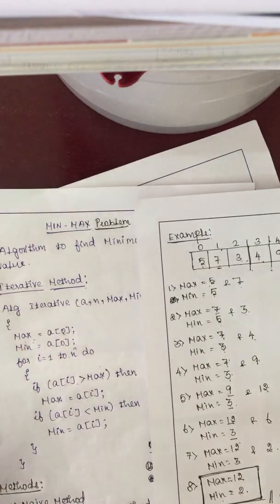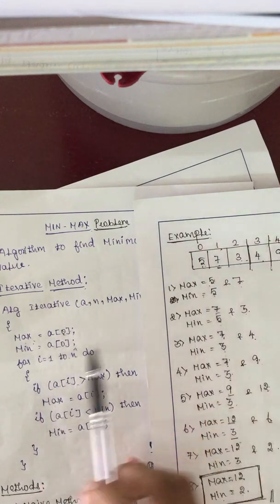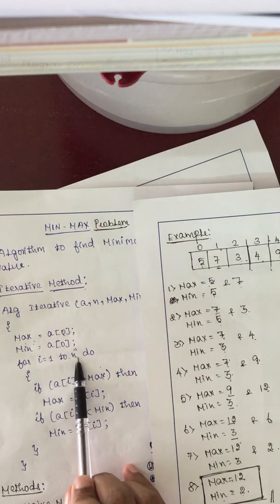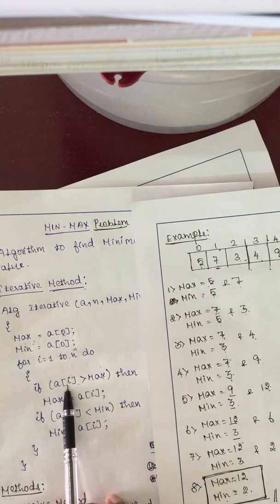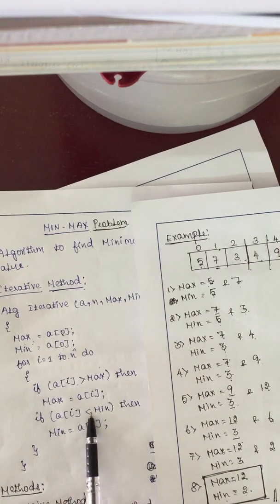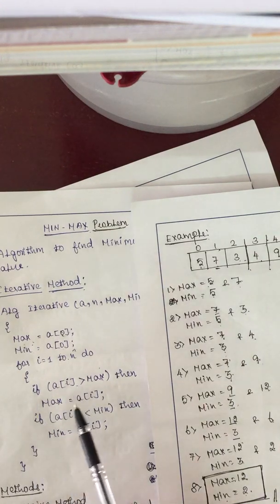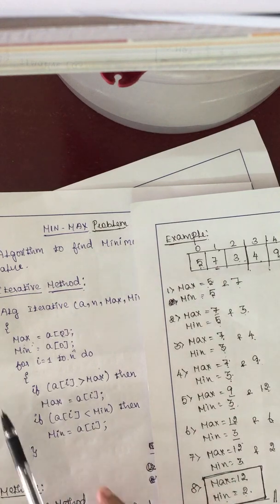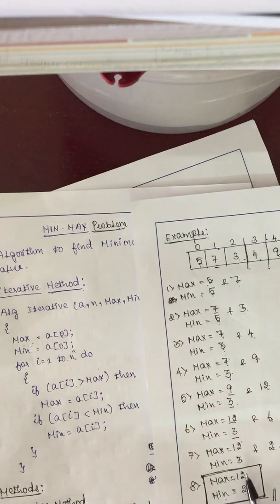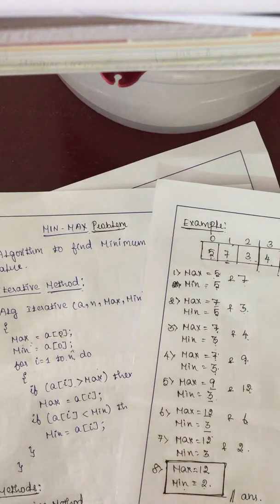In the algorithm, the first element is set as both max and min. Then with the help of a loop, all other elements are compared from index 1 to the last position. If the current array element is greater than max, it falls under max; if it is lesser, it falls under min. This continues iteratively until the last position, and the final retained values are the solution. This is the iterative method.